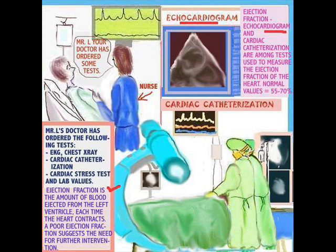Patients with a poor ejection fraction have great difficulty breathing and very little capacity. You probably won't see this if you work on a surgical floor — you really need to work in a place like an intensive care unit where these patients are closely monitored. Ejection fraction is the amount of blood ejected from the left ventricle each time the heart contracts. A poor ejection fraction suggests a need for further intervention, mainly because there's damage to the heart muscle and it is not able to do its job efficiently.